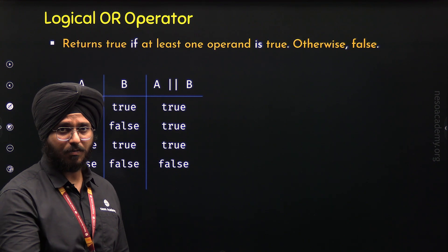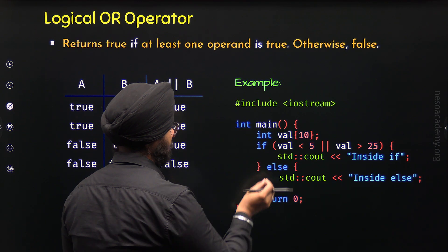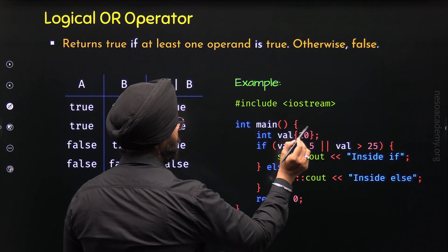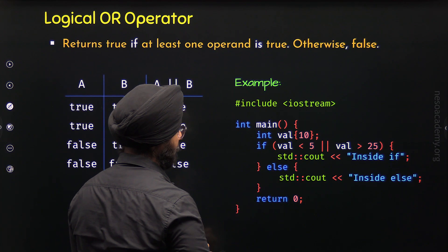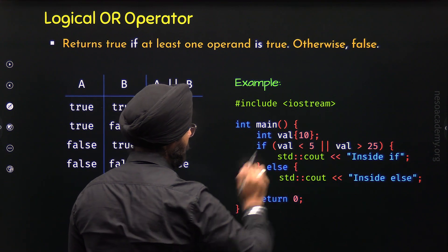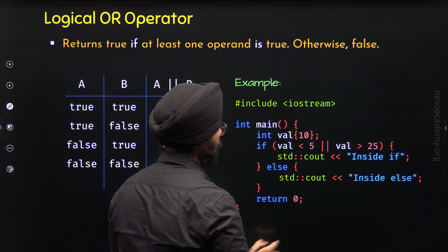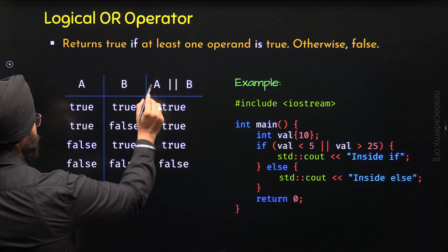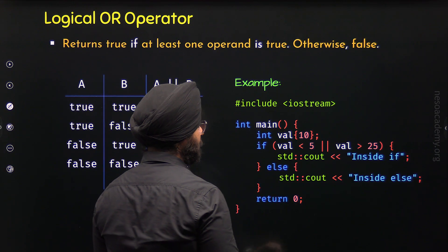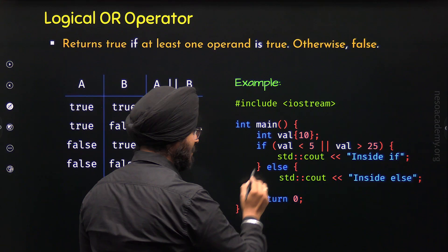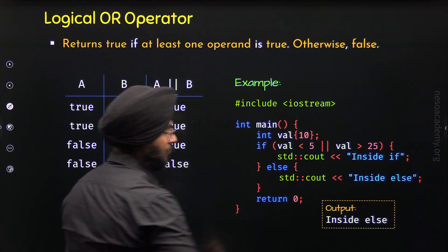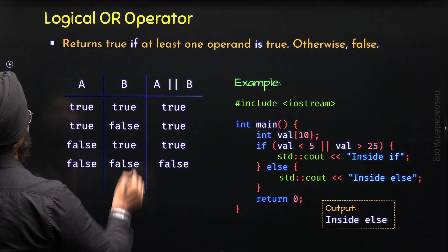Let's demonstrate this with an example. I took the same example program with some changes. Now we have two conditions combined with the logical OR operator. The value of the variable is 10, so 10 is not less than 5 and 10 is not greater than 25 — both conditions are false. Since both operands of the logical OR operator are false, we get false as the result. This means the else-block executes, and we get 'inside else' as the output.